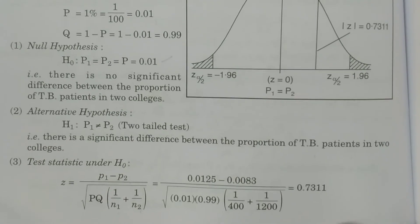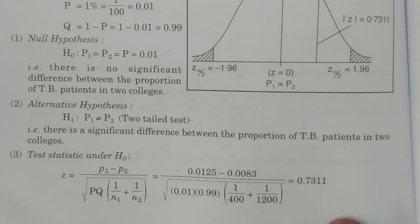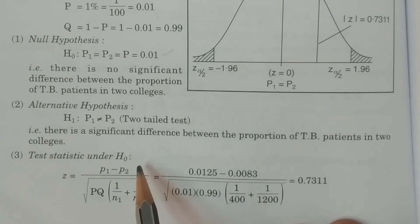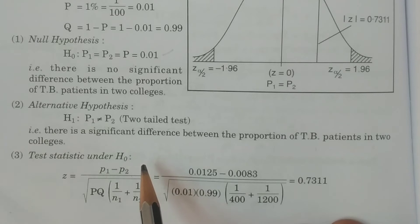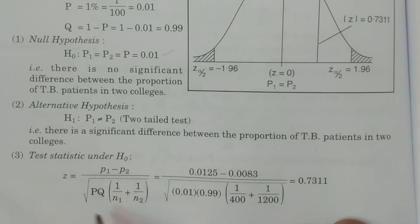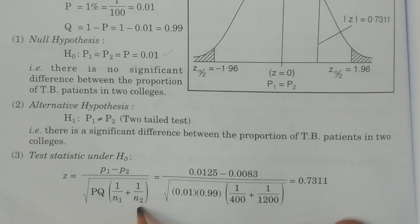Now calculate the test statistic. In this case, capital P1 equals capital P2 equals capital P — Case 1, where capital P is known. The population proportions are equal and known. The formula is: Z equals small p1 minus small p2 divided by the square root of capital P times capital Q multiplied by 1 by N1 plus 1 by N2.